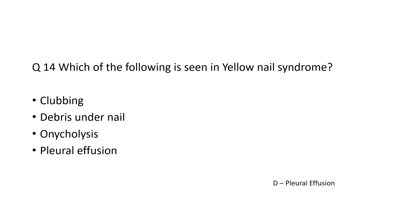Coming to the next question: which of the following is seen in yellow nail syndrome? Options include clubbing, decreased nail growth, onycholysis, and pleural effusion. The answer is pleural effusion, which is seen as chylothorax in yellow nail syndrome. The other three options are very non-specific. Clubbing is very rarely seen. Onycholysis can be seen, but pleural effusion is seen in more patients with yellow nail syndrome.